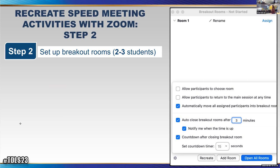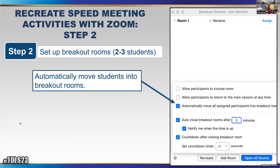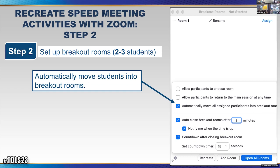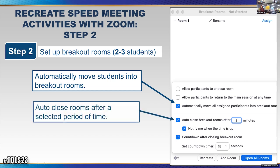Step two is setting up your breakout rooms. Keep them very small — two students per room — to maximize speaking opportunities. If there's an odd number, you'll need three students. In the settings before you open breakout rooms, make sure 'automatically move all assigned students' is checked so students are pushed into the room without having to click anything. Also select auto-close room with your preferred time — usually two to five minutes — and have the countdown selected so students get a warning before the room closes.